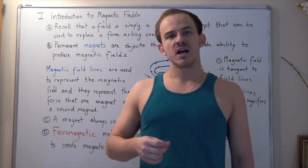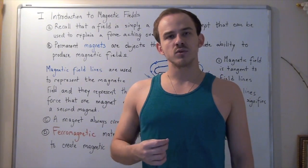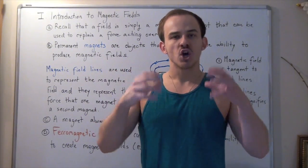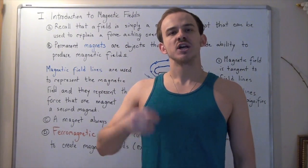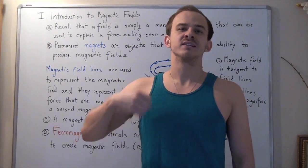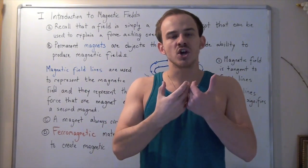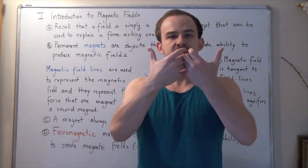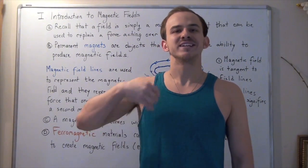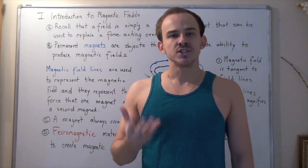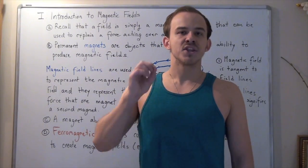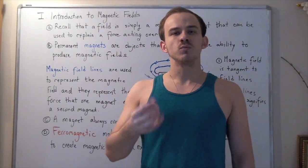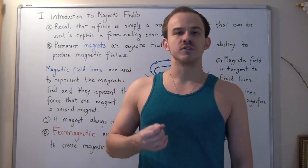Just as two protons or two electrons repel each other because of an electric field, two magnets placed next to each other with north poles or south poles facing each other will repel because of a magnetic field. Likewise, just as an electron and a proton attract because of an electric field, two magnets placed so that the north pole and south pole are facing each other will attract because of a magnetic field. You might imagine there is some relationship between magnetic fields and electric fields — and in fact there is. These are not the same thing, but a relationship does exist, and in the next lecture we will explore what this relationship is.